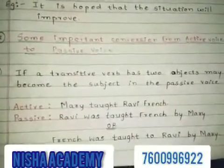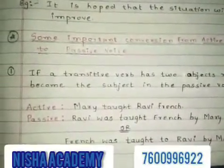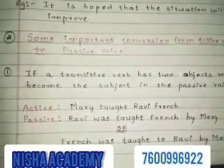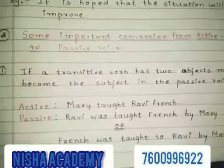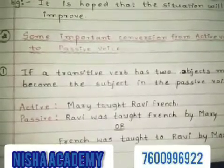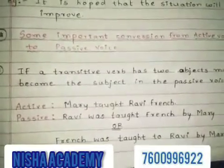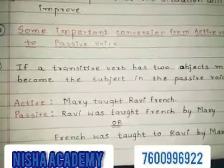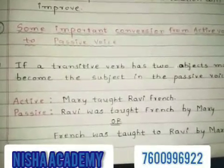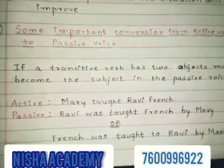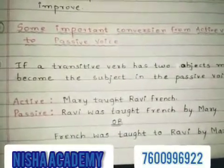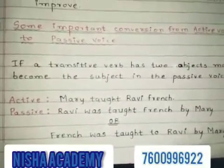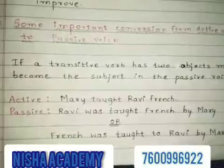Now let us learn some important conversion rules from active voice to passive voice. First, if a transitive verb has two objects, either object may become the subject in the passive voice. For example, in active voice: 'Mary taught Ravi French.' In passive, we can convert it to: 'Ravi was taught French by Mary,' or 'French was taught to Ravi by Mary.'